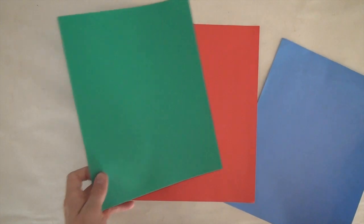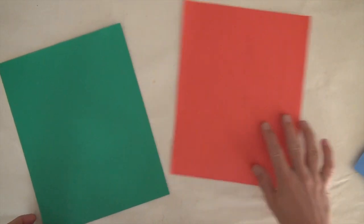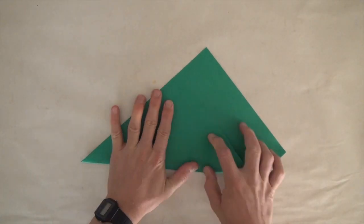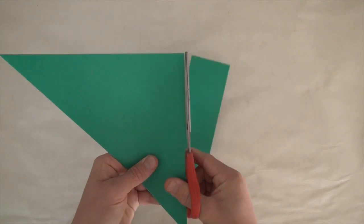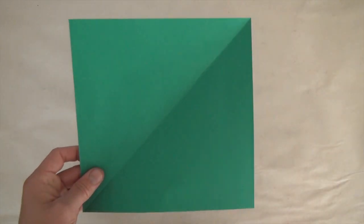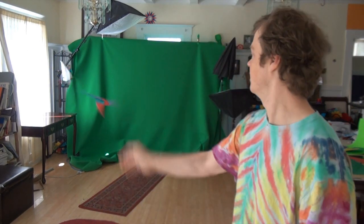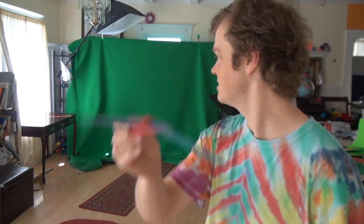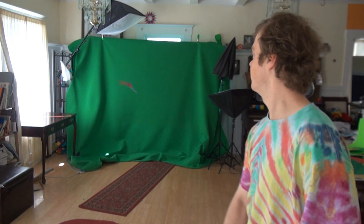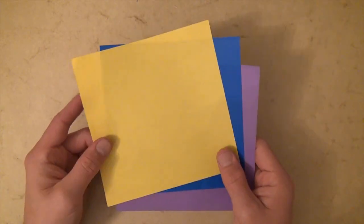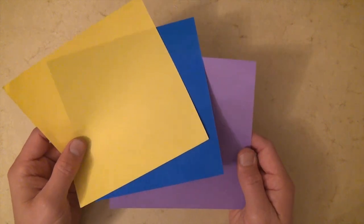Now, if you want to use three sheets of printer paper, you have to cut each one of them square by folding along the diagonal and cutting the extra off. And now the printer paper looks like this and flies like this. But I'm going to use three 6-inch squares of kami.